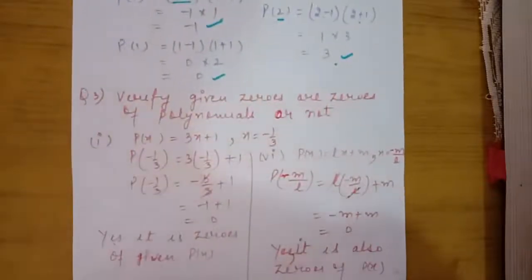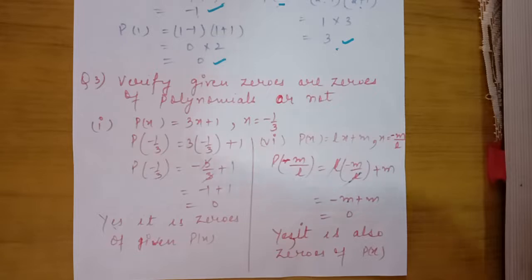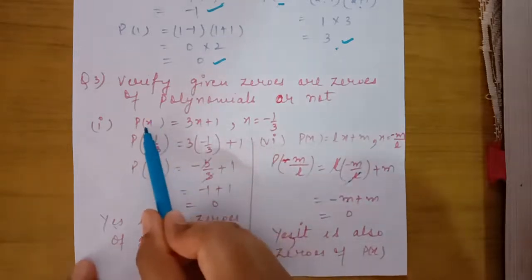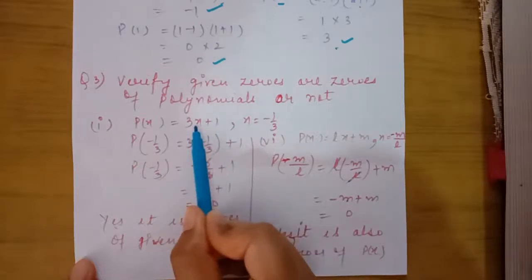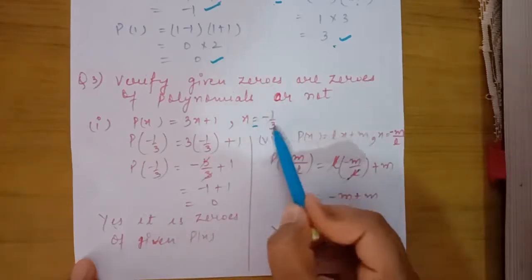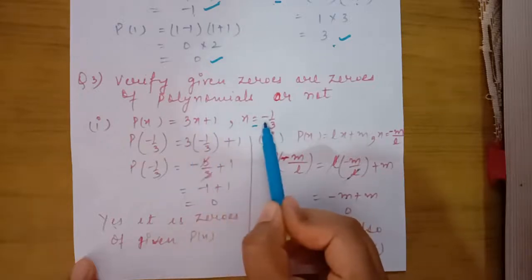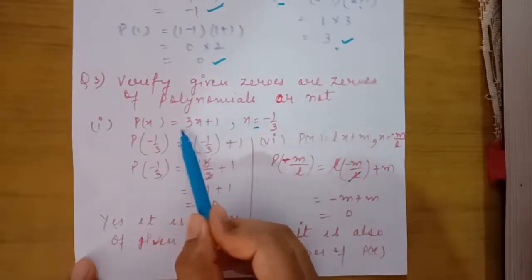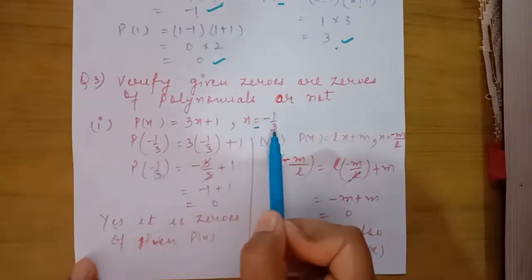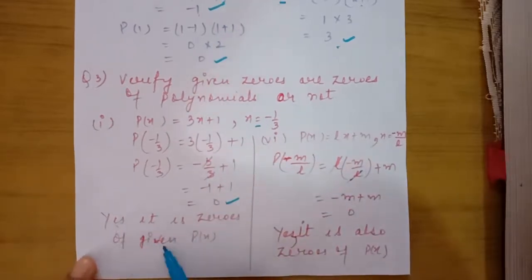Question 3 is also very easy and important: verify that the given values are zeros of the polynomial or not. In the first part, p(x) equals 3x plus 1, and it is given that x equals minus 1 upon 3. We have to verify whether this polynomial gives 0 at that value. We replace x with minus 1 upon 3 and we get the answer 0 — yes, it is the zero of the given polynomial.